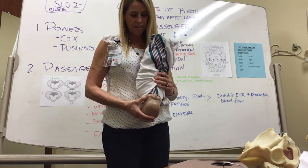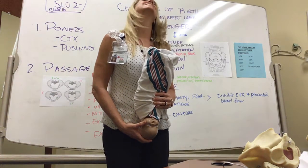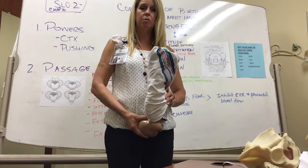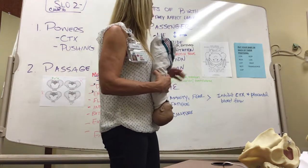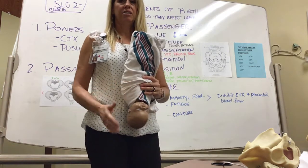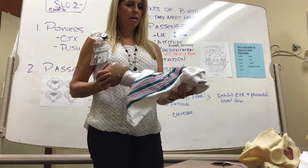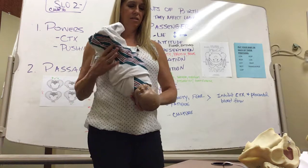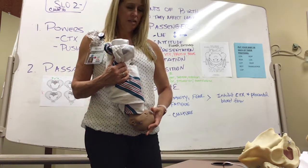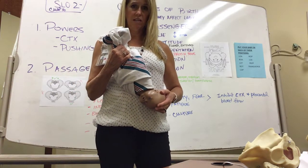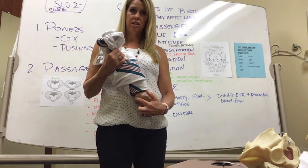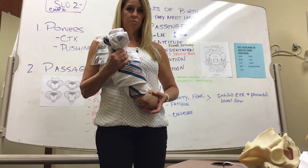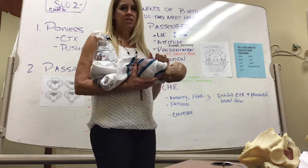The next thing is attitude — is the baby's neck flexed, tucked to help come through, or is it extended? If the baby's head is extended, the widest part is exposed, making it hard to come through the pelvis. We want our babies to be flexed. Next is presentation: is the head presenting, called vertex? Is the bottom presenting, meaning the sacrum? Or is the mentum presenting — that's a brow presentation or a chin presentation.